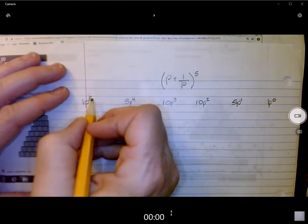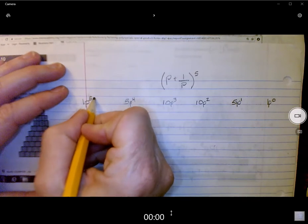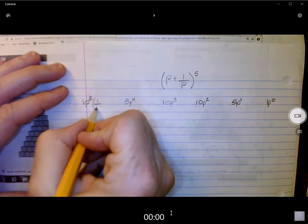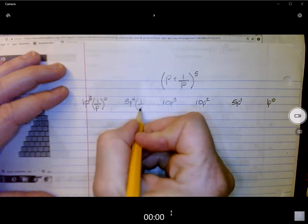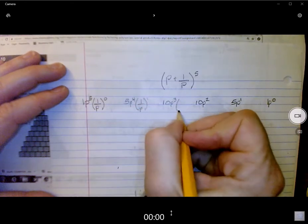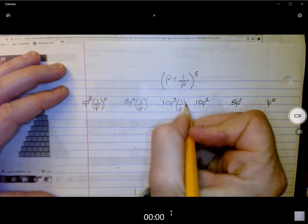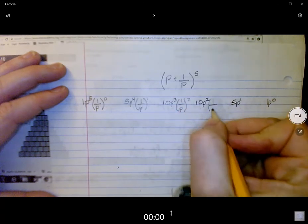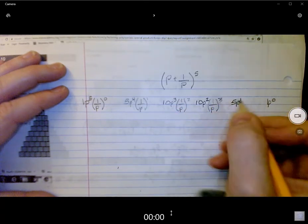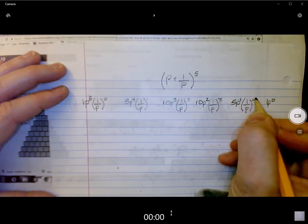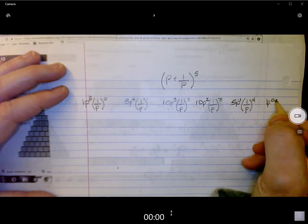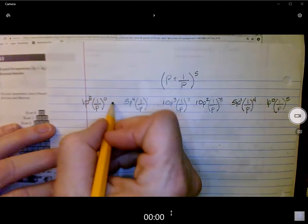And then we'll take the second term, and here's where we start with the zeros. 1 over P to the zero, 1 over P to the first, 1 over P squared, 1 over P to the third, 1 over P to the fourth, and 1 over P to the fifth. Plus signs between all.